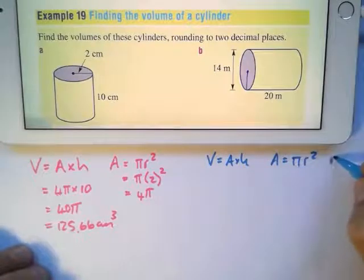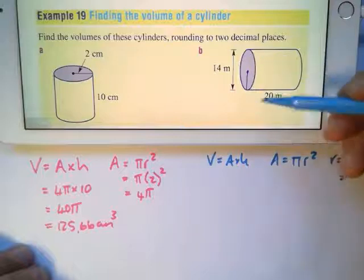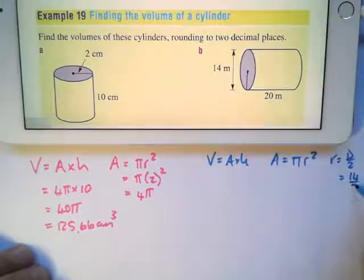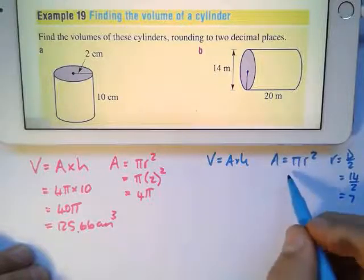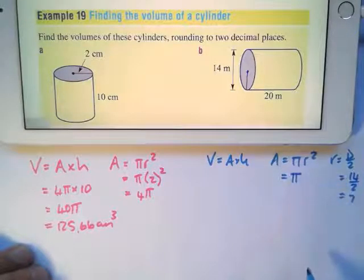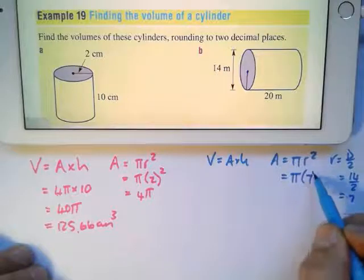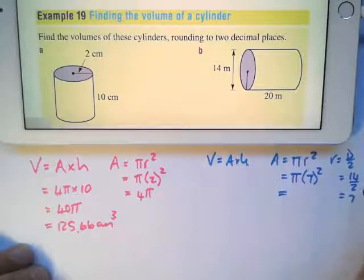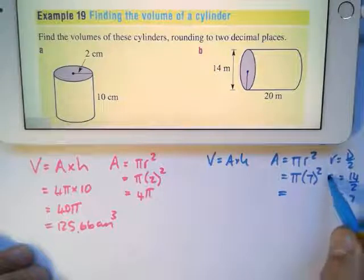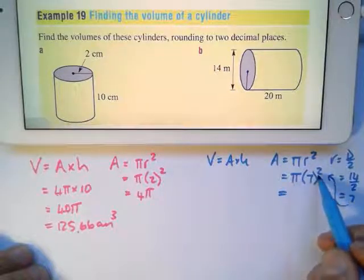I'm going to say r equals diameter divided by 2. So the diameter is 14, I'm going to divide that by 2 to give me 7. I'll now substitute 7 in here, so it will give me π times 7 squared. I'm going to calculate that: π times 7 squared. 7 squared is 49, so 49 times π is 49π.